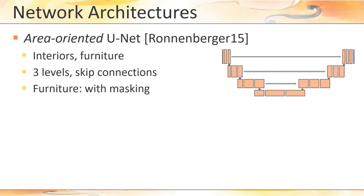Our networks are based on two architectures. The area-oriented network is a traditional UNET architecture that works on 2D images and that is therefore amenable for the first and the last step, namely interior footprint and furniture extraction. We used a classical three-layer architecture with skip connections presented by Ronnerberger et al. for both networks.